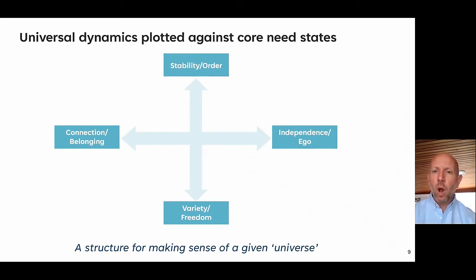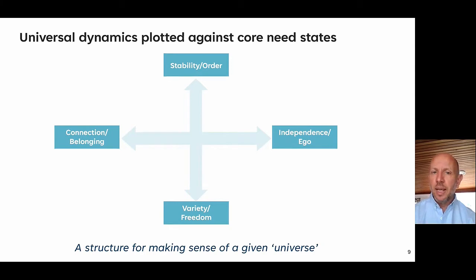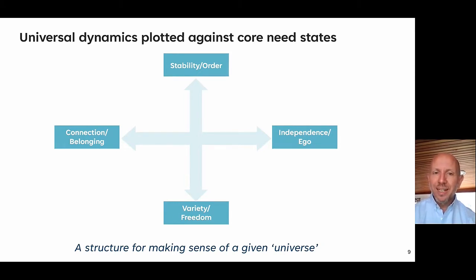Whilst we all as individuals have different needs, we all as humans have universal needs. You can plot these universal needs on a two-by-two matrix. Looking top to bottom, we all have some level of need for stability, order, or status quo — certainty — and on the flip side, a need for variety or freedom, the ability to shake things up. We'll all have a fundamental preference for one or the other, and sit somewhere on that dynamic.